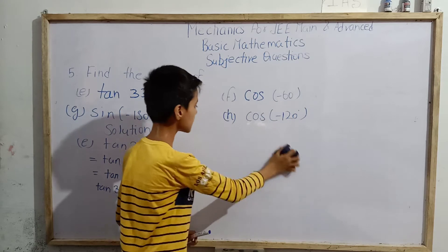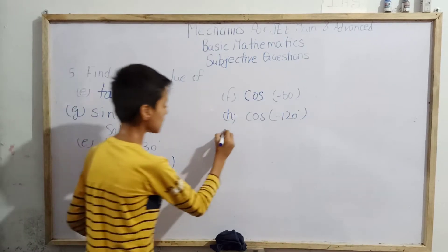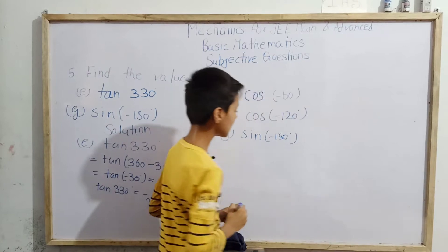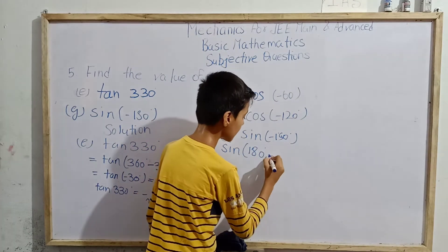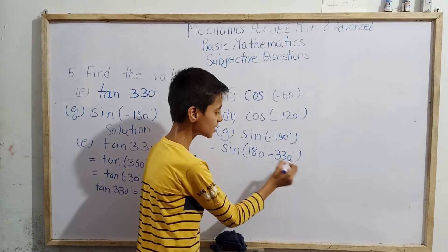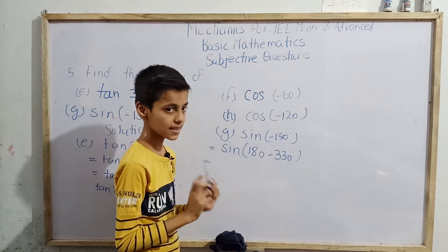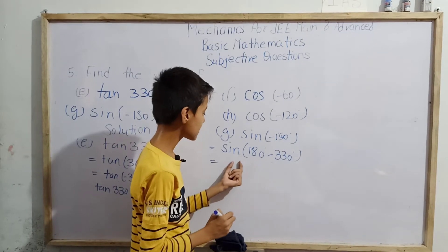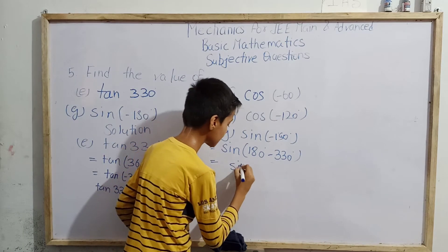Now part g: sin(-150°). Can this be written in the form sin(180° - 330°)? Yes, because 180° - 330° = -150°. We know sin(180° - θ) = sin θ, so using sin 180° = 0 and the identity, we get -1 × sin(-330°) = sin(330°).